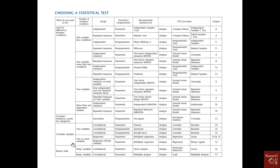For correlations: if we have two variables and data is parametric, we use Pearson correlation. If data is non-parametric, we use Spearman. If data is non-parametric and categorical, we use Kendall's tau.